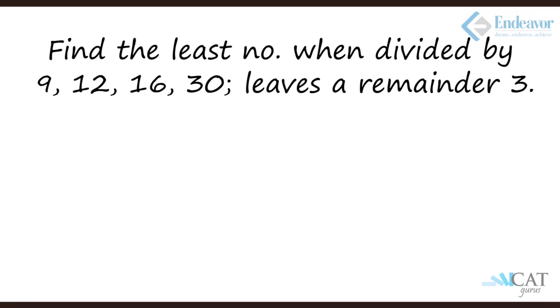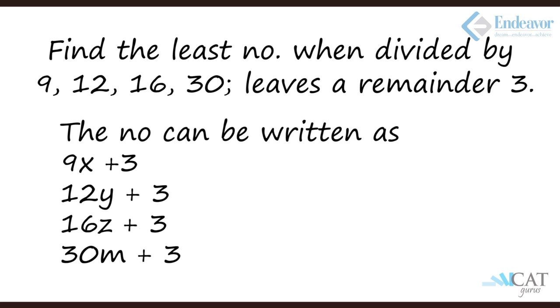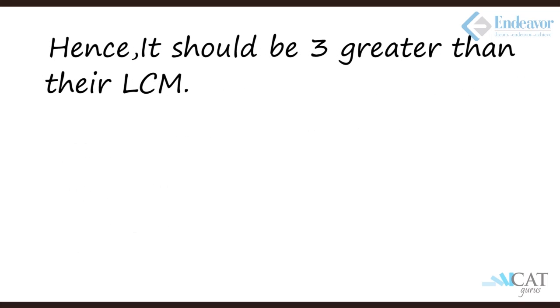Let's take another example. The least number which when divided by 9, 12, 16, and 30 will leave a remainder 3. How do we find this? The number can be written as 9x plus 3, 12y plus 3, 16z plus 3, and 30m plus 3. So we see that if we remove the plus 3 part, it has to be an LCM of these four numbers.